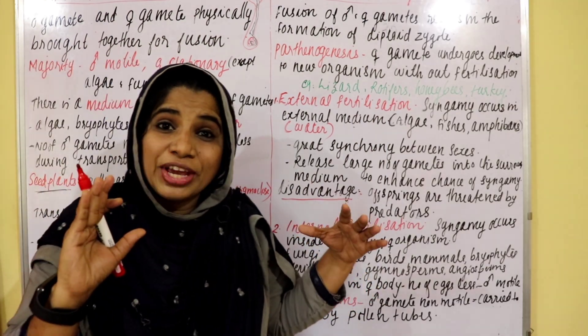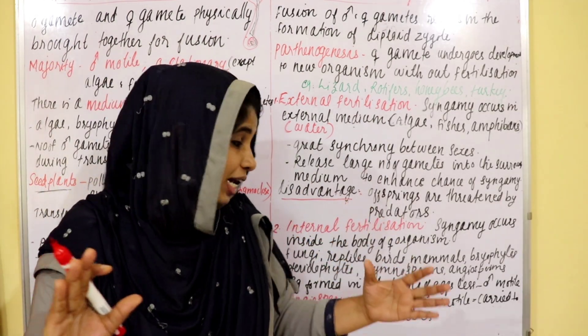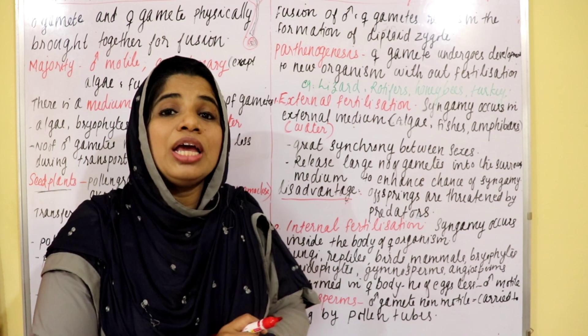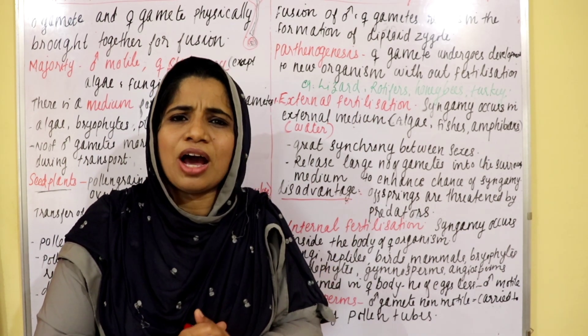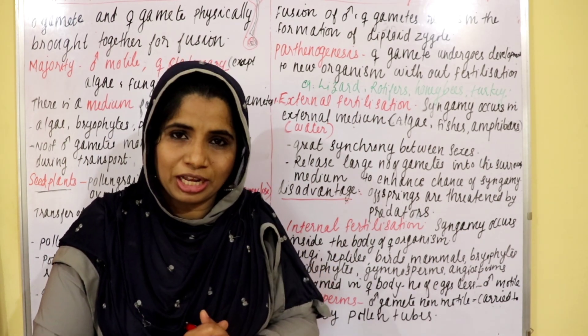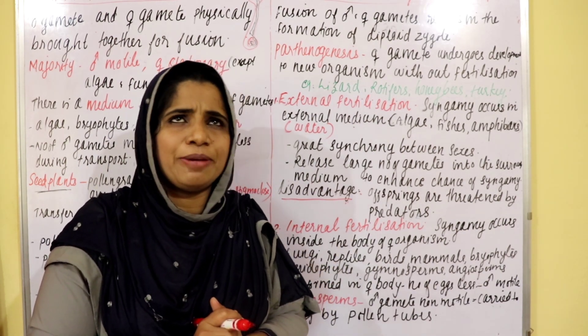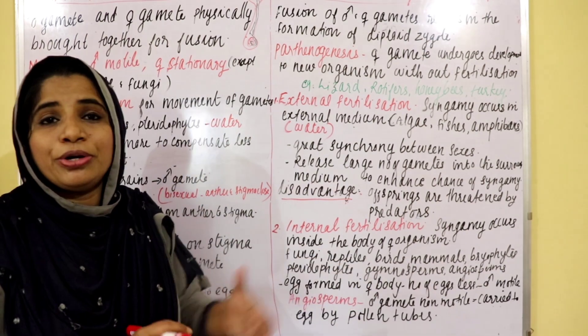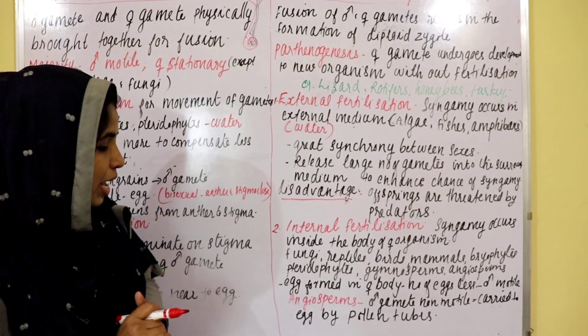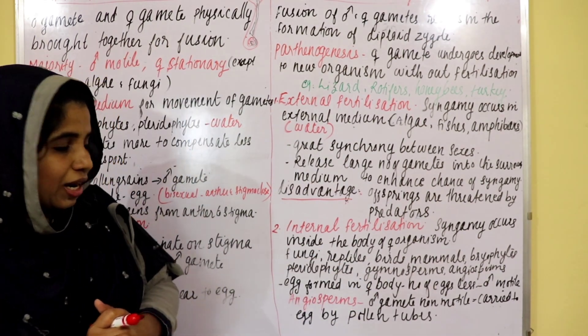In internal fertilization, the number of eggs produced is less. The male gametes are motile and are produced in large numbers.